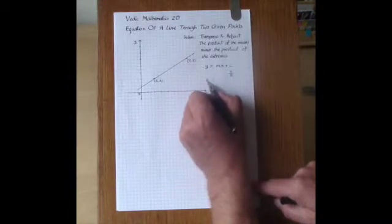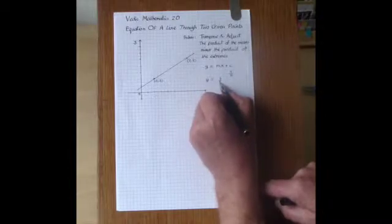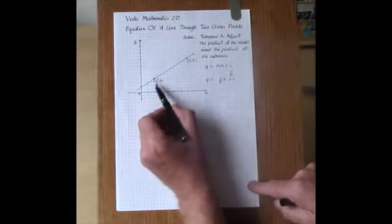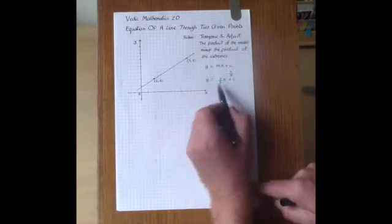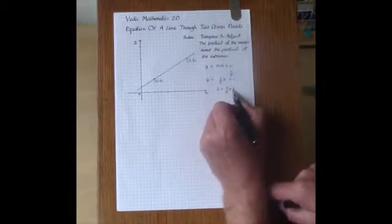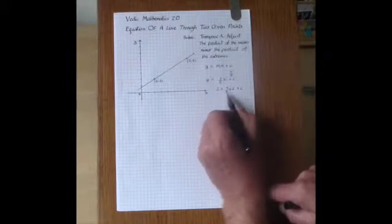We can put that into the equation so it'll say Y equals 3 fifths X plus C. We then take one of the coordinates of one of the points and substitute it into the equation. 2 equals 3 fifths times 2 plus C and solve this equation for C.